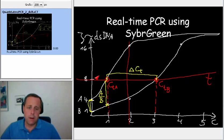In order to go from the amount that you had at this stage, in order to reach the threshold that we predefined, you need delta CT more doublings to compensate.